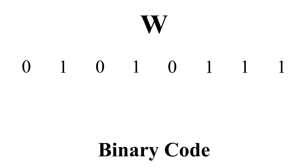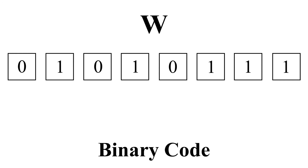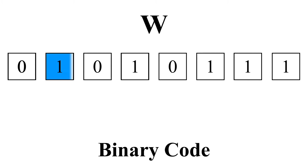This is the letter W — capital W — in binary code: 0, 1, 0, 1, 0, 1, 1, 1. The ones fall in the second, fourth, sixth, seventh, and eighth position.